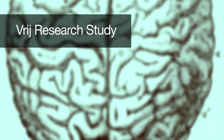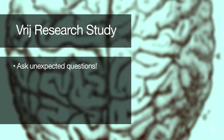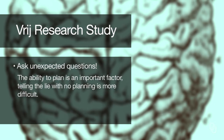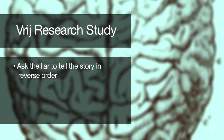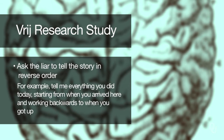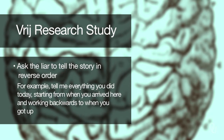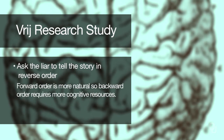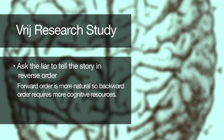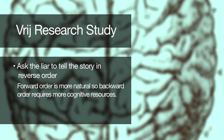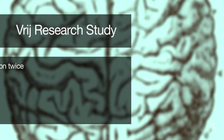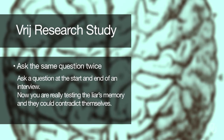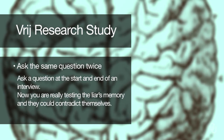We can start by asking unexpected questions. The ability to plan is an important factor — telling a lie with no planning is more difficult than if you have time to plan it out. Second, we can ask the liar to tell the story in reverse order. For example, I could say, tell me everything you did today, starting from when you arrived here and working backwards to when you got up. Forward order is more natural, so a backward order requires more cognitive resources and puts the liar under pressure. We could also ask the same question twice — asking at the start and at the end of the interview can really test the liar's memory, and they could contradict themselves and show their lie.